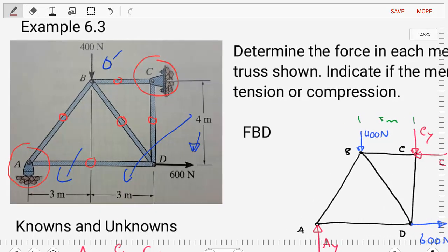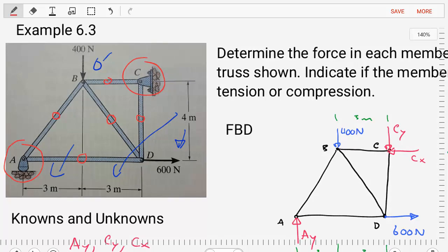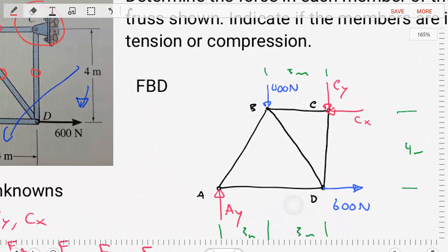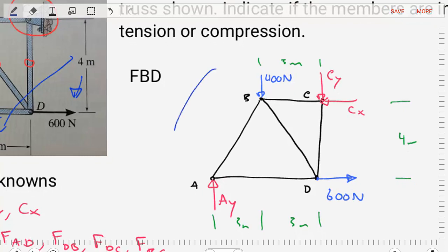The first step is to create a free body diagram of our system, where we free the system from its constraints by replacing the supports with reactions. We simplify the truss into points and lines, replace the pin support at C with forces CX and CY, and replace the roller at A with force AY. We also put back the dimensions and known external loads to get our diagram together.